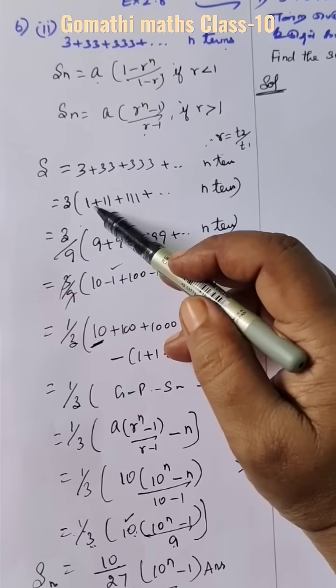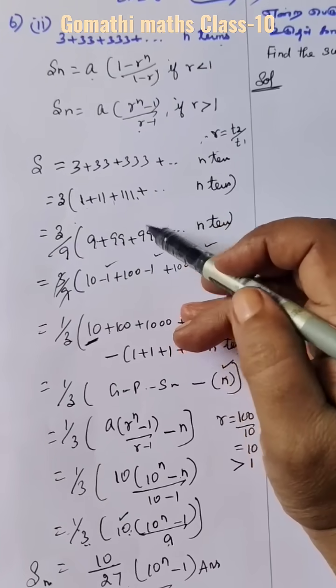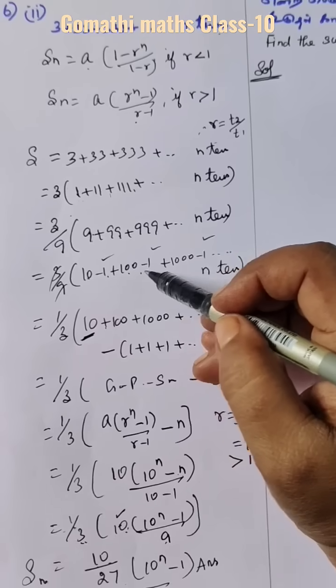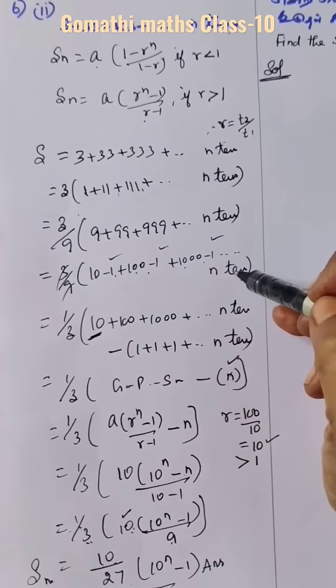So 9, 99, 999. This is 10 minus 1, 100 minus 1, 1000 minus 1 etc. n terms.